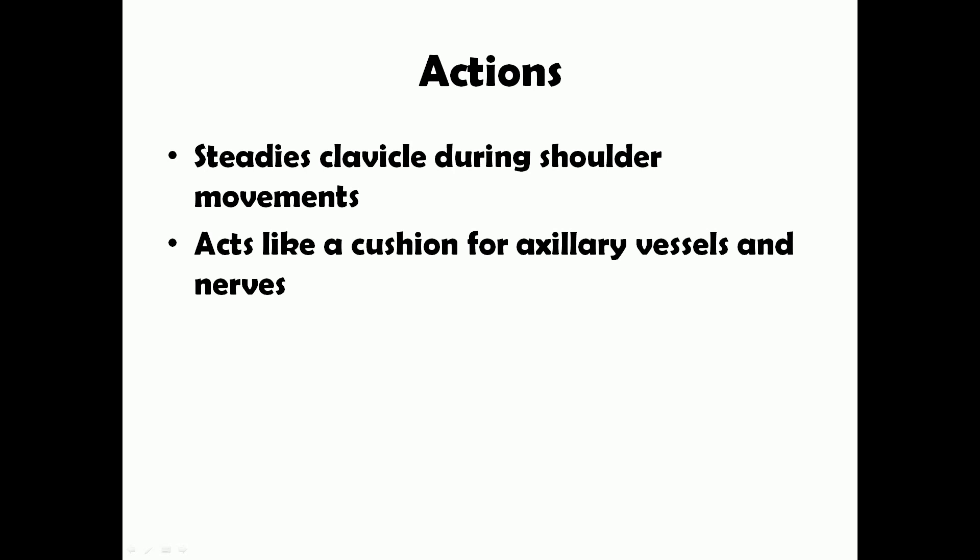The actions of subclavius are not very significant, but it does help in steadying the clavicle during shoulder movements. Without it, the clavicle would not be steady and the pectoral girdle would not function properly during shoulder movements. The subclavius muscle also acts like a cushion for the axillary vessels and nerves which enter the arm through the cervical axillary canal.